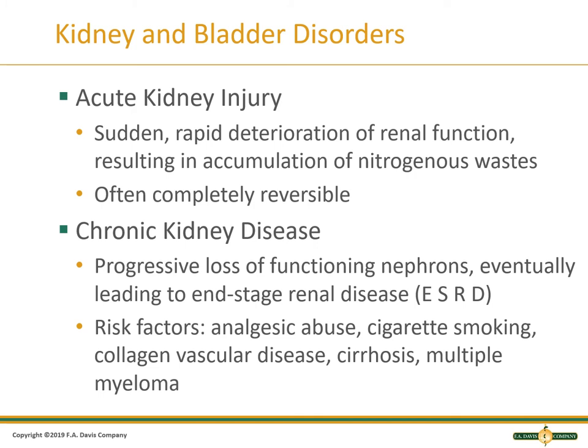Acute kidney injury is a sudden, rapid deterioration of renal function. It could be secondary to medication, trauma, or multiple other causes. Oftentimes it is reversible — you will see the BUN and creatinine elevate, you treat the underlying cause, and the renal functions start to normalize.